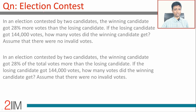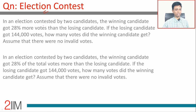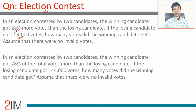This is a question on election contests. I'm going to read two questions rapidly. I'll assume you've read the question — if not, hit pause, read it, and see what the difference between these two is. First: an election contested by two candidates, the winning candidate gets 28% more votes than the losing candidate; the losing candidate got 144,000 votes. How many votes did the winning candidate get? Assume there were no invalid votes.